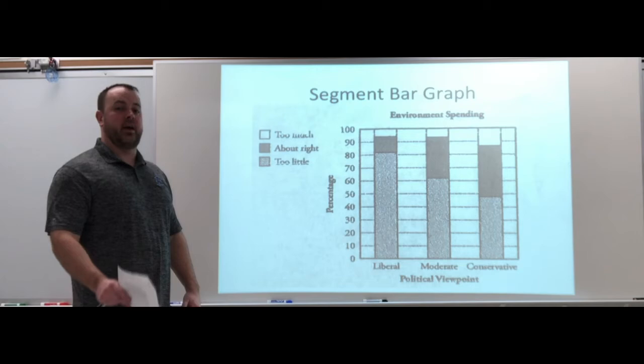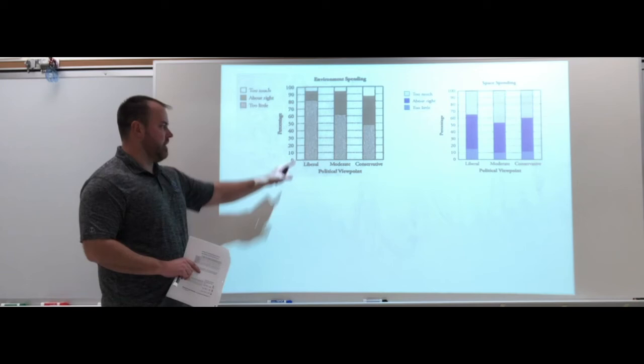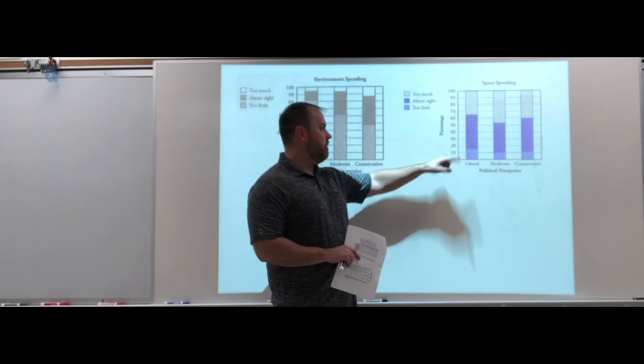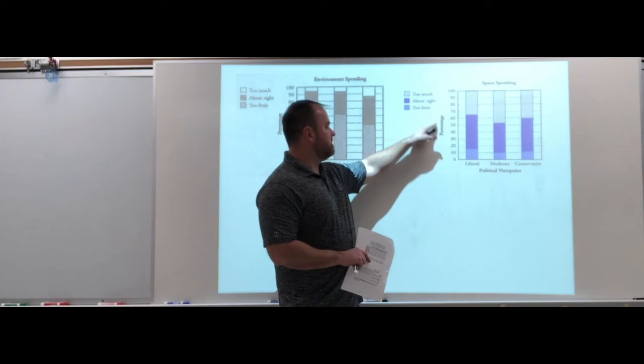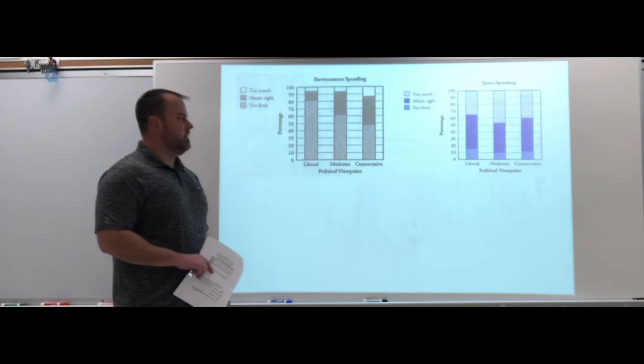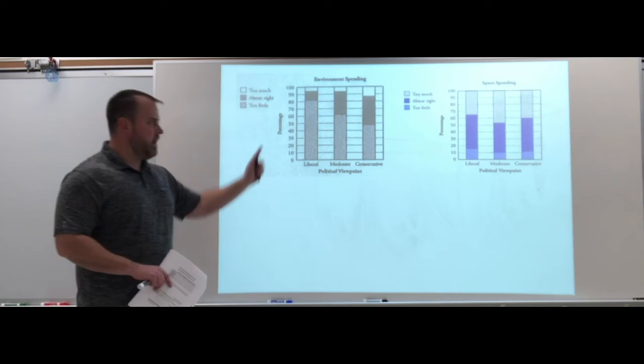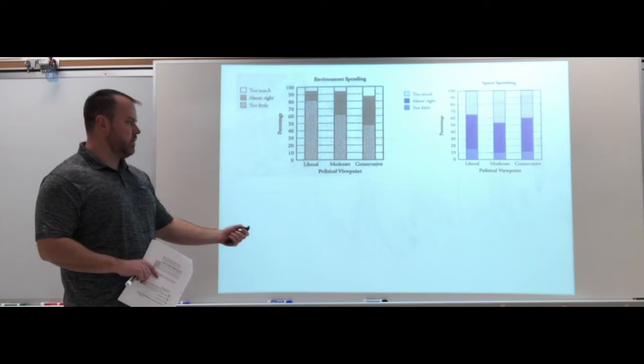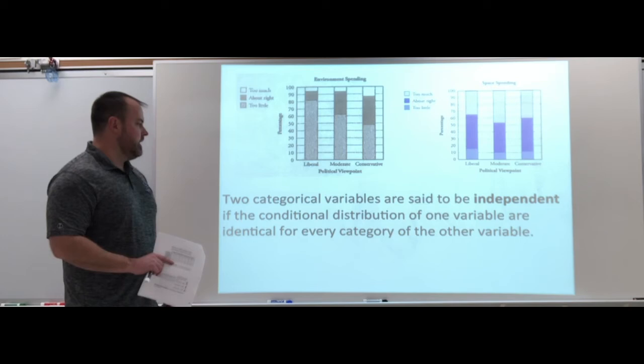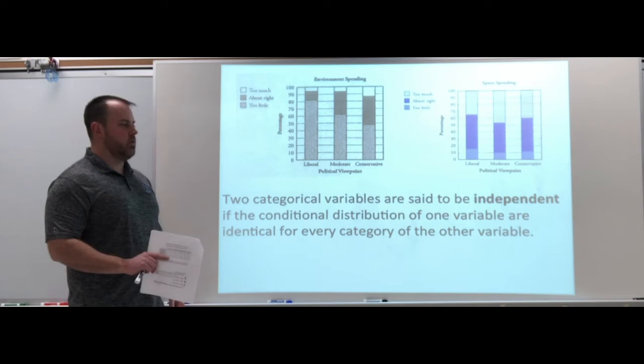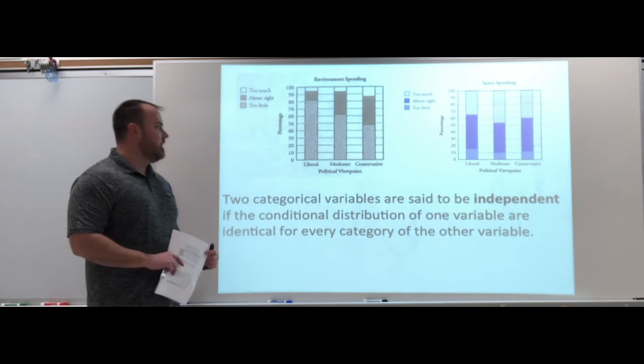One thing a segmented bar graph should be able to help you do is tell if there are independent variables or not. Let's look at two different segmented bar graphs. We have our environmental spending here, that's the one we just looked at, and now here's space spending. How much is our government spending on space? We still have liberals, moderate, conservatives, and the percentage. Again we have too little, about right, too much. Two categorical variables are said to be independent if the conditional distributions of one variable are identical for every category of the other variable.